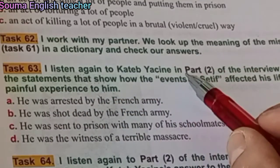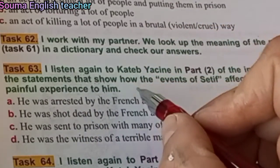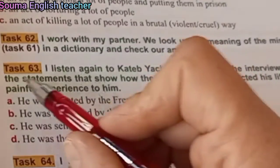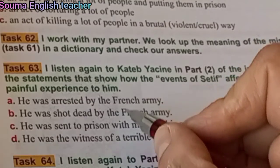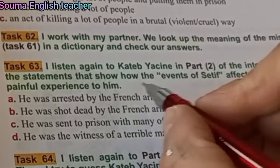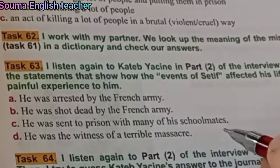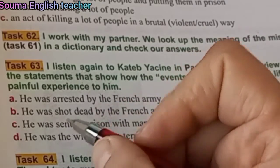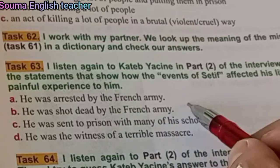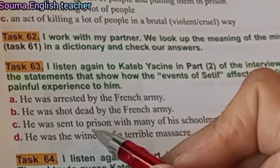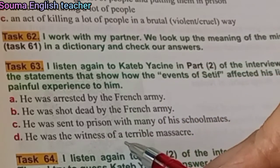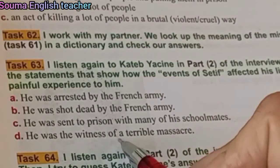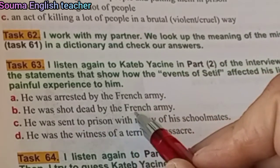Task 63: Listen again to Katib Yassine in part 2 of the interview and choose the statements that show how the events of Setif affected his life and were a painful experience to him. The options are: he was arrested by the French army; he was shot dead by the French army; he was sent to prison with many of his schoolmates; he was the witness of a terrible massacre. We choose: he was sent to prison with many of his schoolmates, and he was the witness of a terrible massacre.